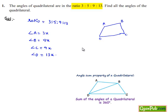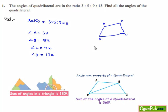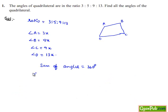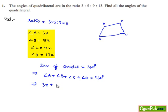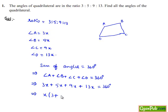We know that the sum of angles in a quadrilateral is equal to 360 degrees. We get angle A plus angle B plus angle C plus angle D is equal to 360 degrees, which implies 3x plus 5x plus 9x plus 13x is equal to 360 degrees. Taking x common, we get 3 plus 5 plus 9 plus 13 in brackets, equal to 360 degrees. That gives us 30.